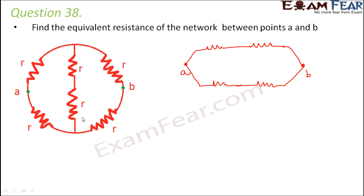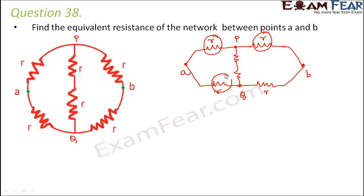There are also two resistances in between. Let us call these intermediate points P and Q — you have two resistances connecting P and Q. Looking at this picture, it looks like a Wheatstone bridge, where four resistances are connected in this fashion, and R/R = R/R, so this is a balanced Wheatstone bridge.